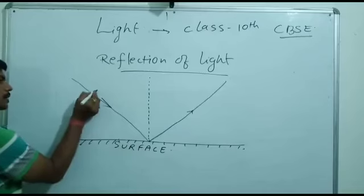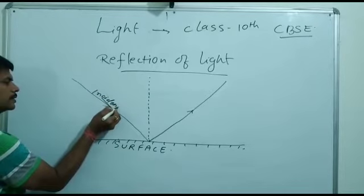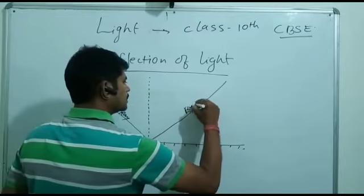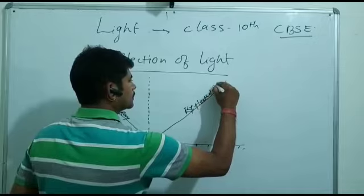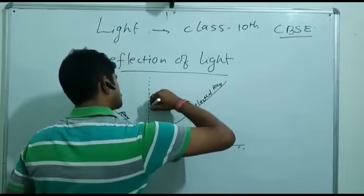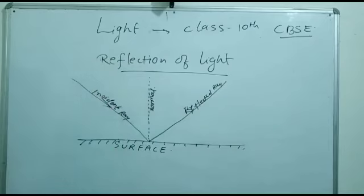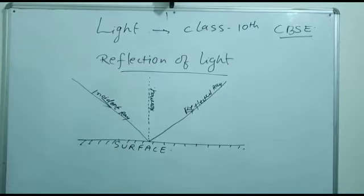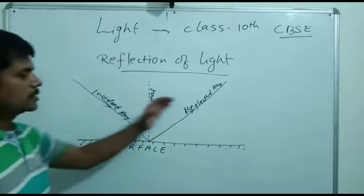So this is the incident ray, and this is the reflected ray, and this one is the normal. You have seen how the light falls on the surface and then it is reflected back from the surface.